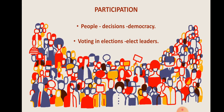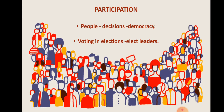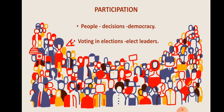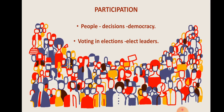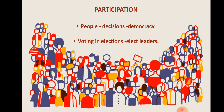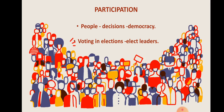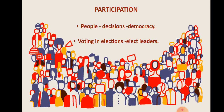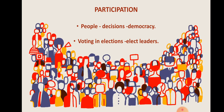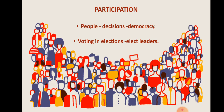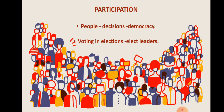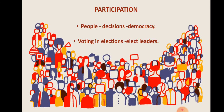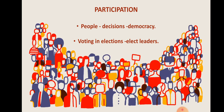Participation. Why do we have regular elections? You have already read that people make decisions in a democratic country. Through voting in elections, people elect leaders to represent them. These representatives take decisions on behalf of the people. In doing so, it is assumed that they will keep in mind the voices and interests of the people.